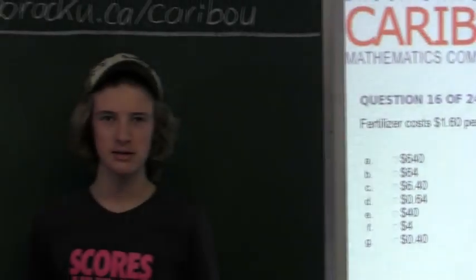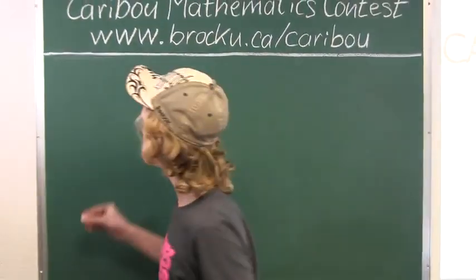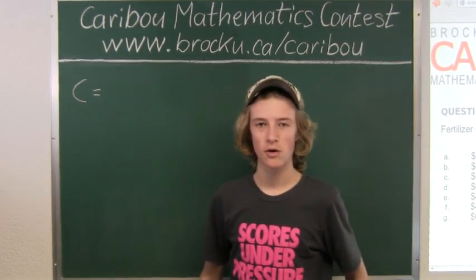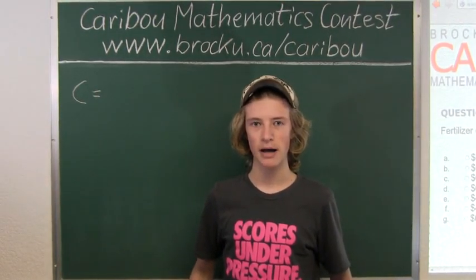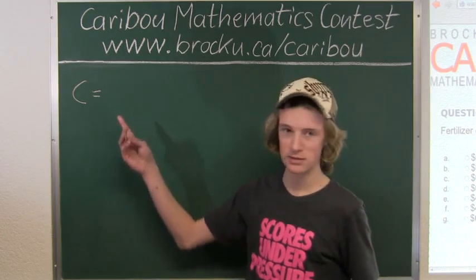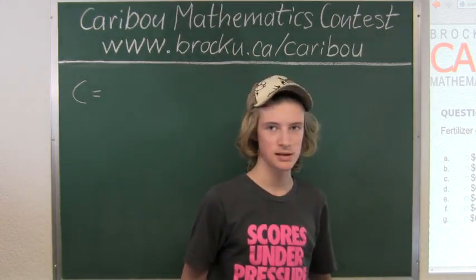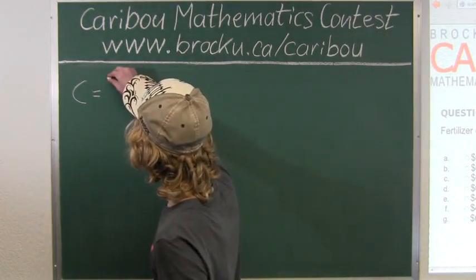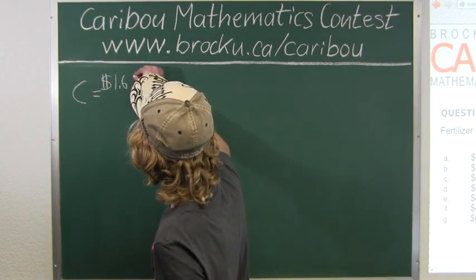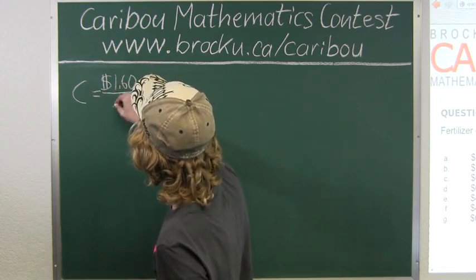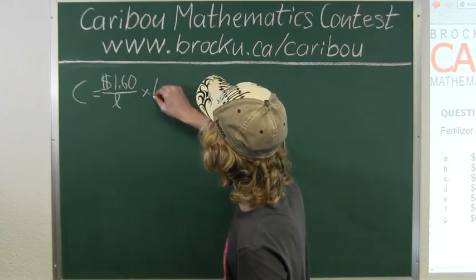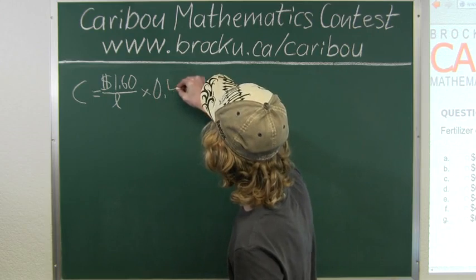So what we want to find out is the cost, which we will write as C. We will calculate the cost by multiplying cost per volume times the total volume. So we know it costs $1.60 per liter, and we have 0.4 meters cubed.